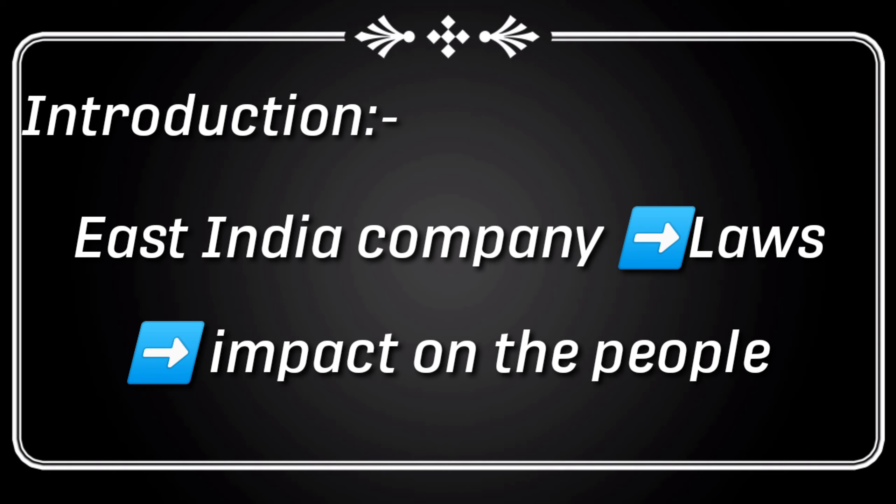In 1857, the people of India rose up against the British. The revolt began as a mutiny of the Indian soldiers on 10th May 1857 in the Meerut cantonment area. The mutiny soon spread to other parts of the country and became the first united effort by the people to exile the British from India. Let us study the grievances of the Indian people that united them in their struggle against foreign rule.